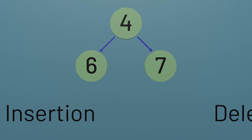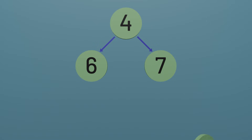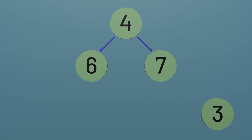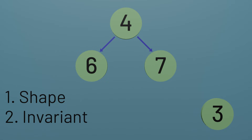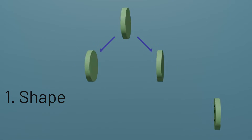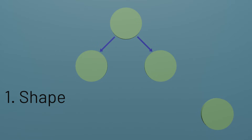Let's start with insertion. When we want to add a new value to a binary heap, there are two factors we need to bear in mind: first, what the shape of the new heap will be, and second, preserving the heap invariant — that nodes are never greater than their children. Before we think about the heap invariant, let's ignore the actual values associated with these nodes for now and just think about the shape of our heap.